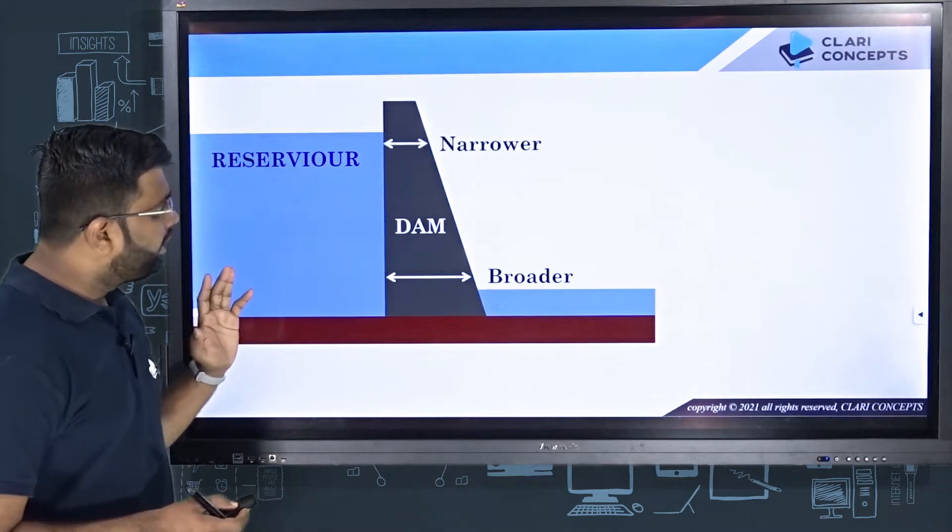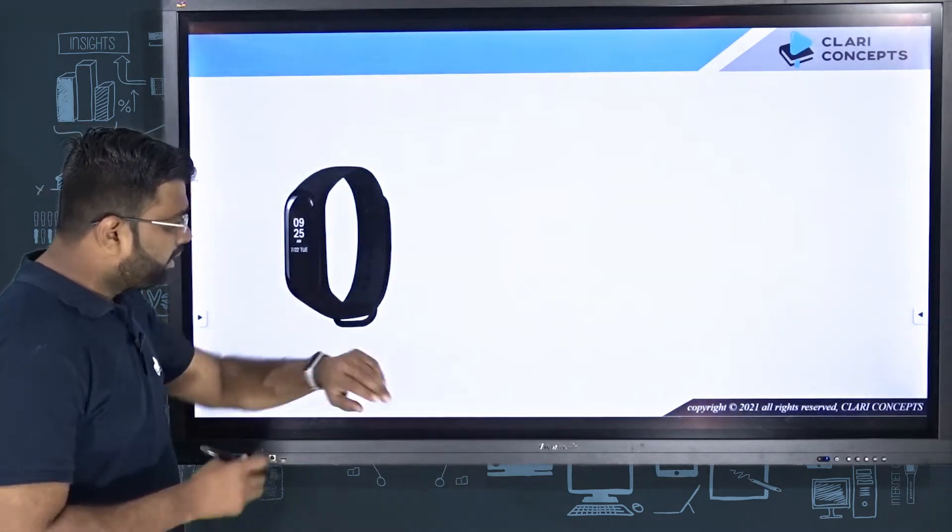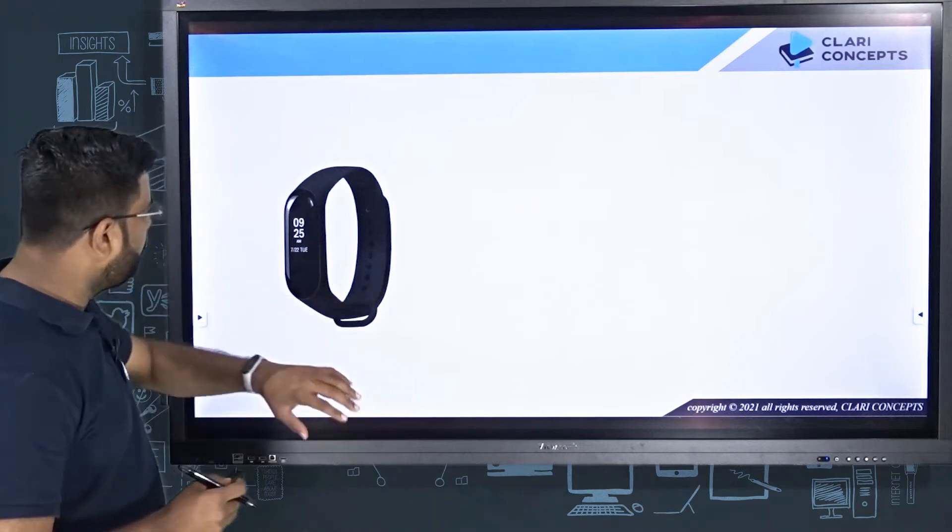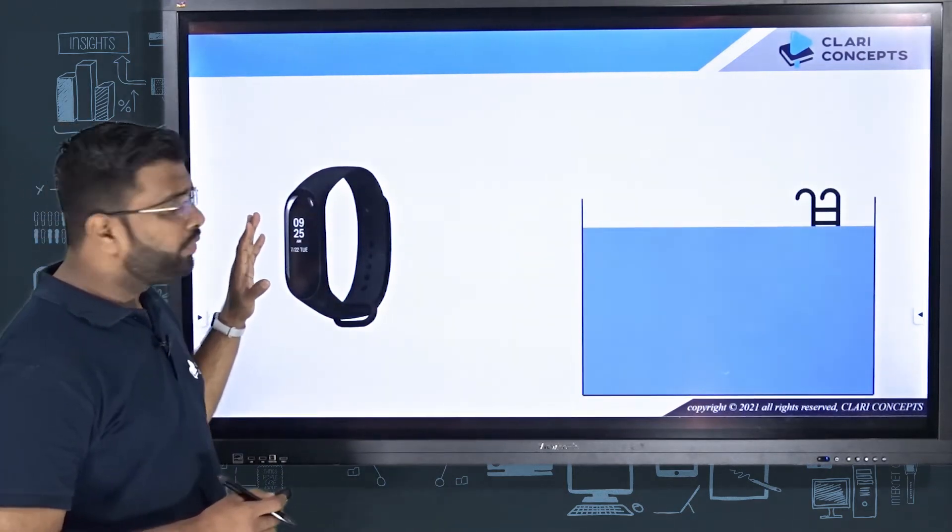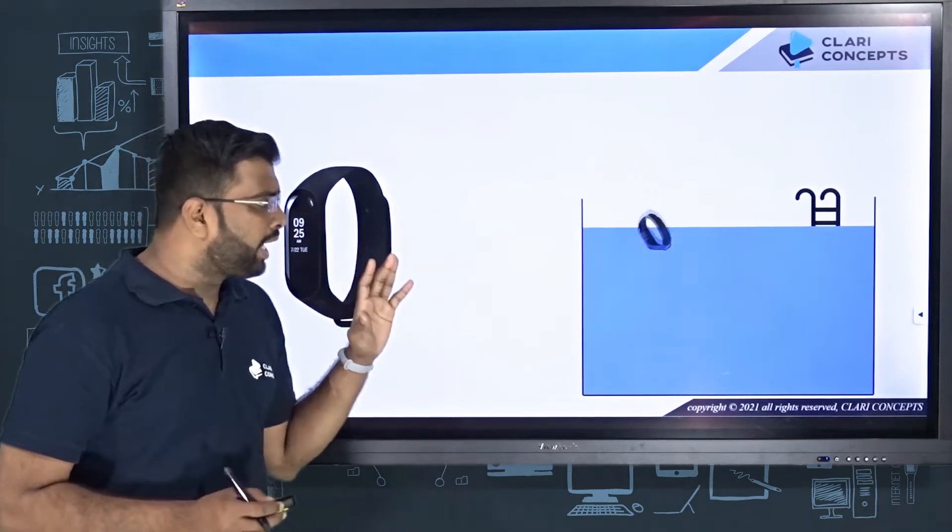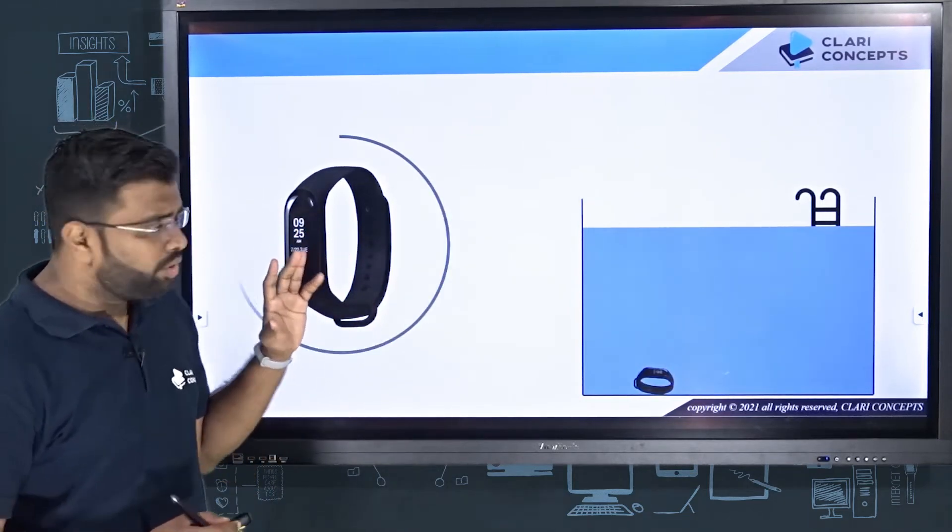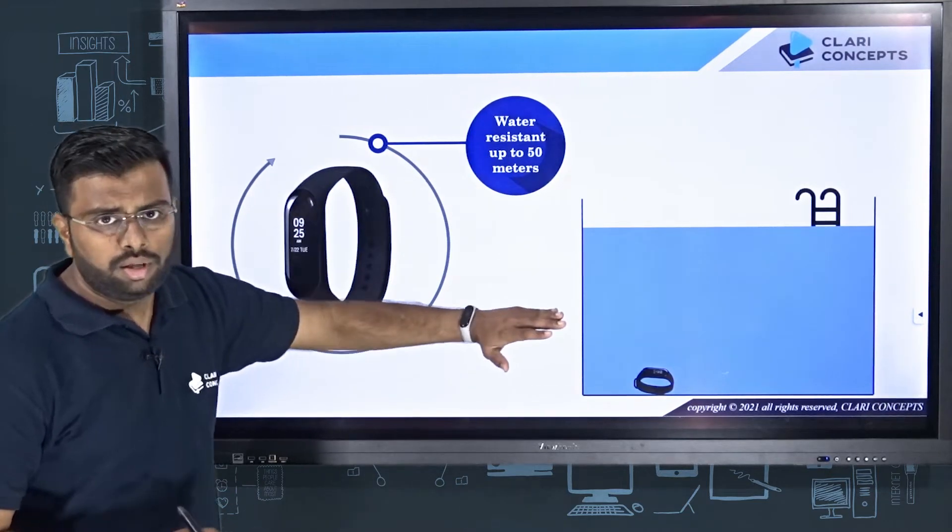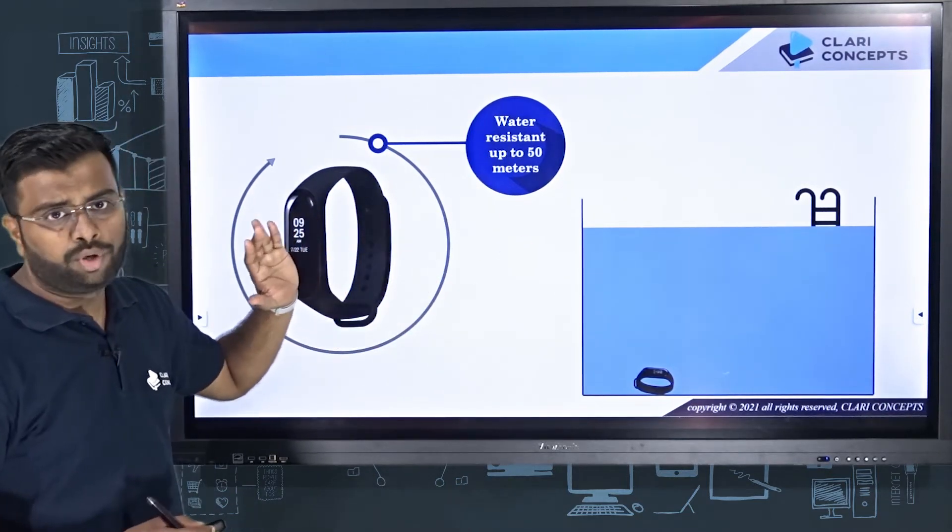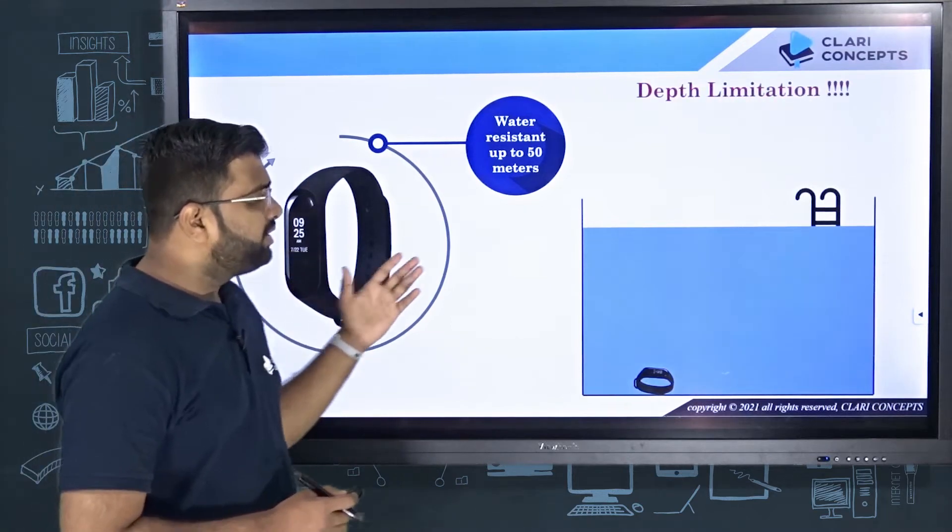Have you looked at the guidelines of this smart band watch? You can see in the guidelines that they say that they are not advisable to use for deep diving. It has certain depth limitations. They say that it is water resistant up to let's say 50 meters of depth, beyond which there are chances water can penetrate into this band. So why does it have depth limitations?